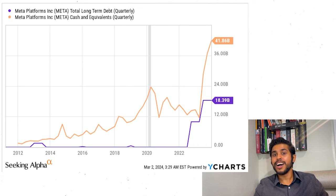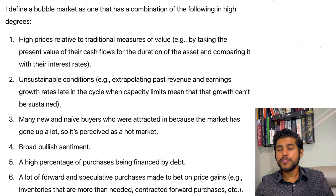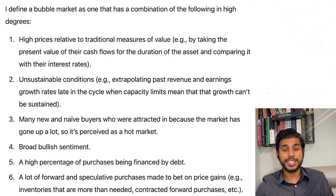Meta only recently started taking on debt. Apple has so much cash in its portfolio. Most of these companies have good balance sheets and none of them are near bankruptcy. For points number three and four, they are not really applicable when looking specifically at the Magnificent Seven companies themselves, so we can skip those.